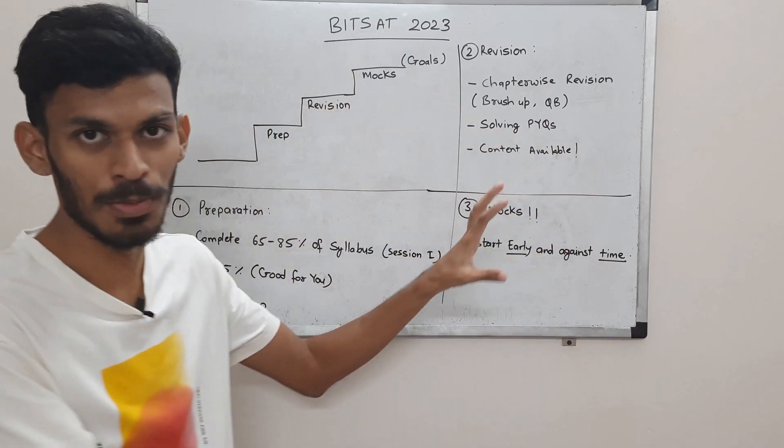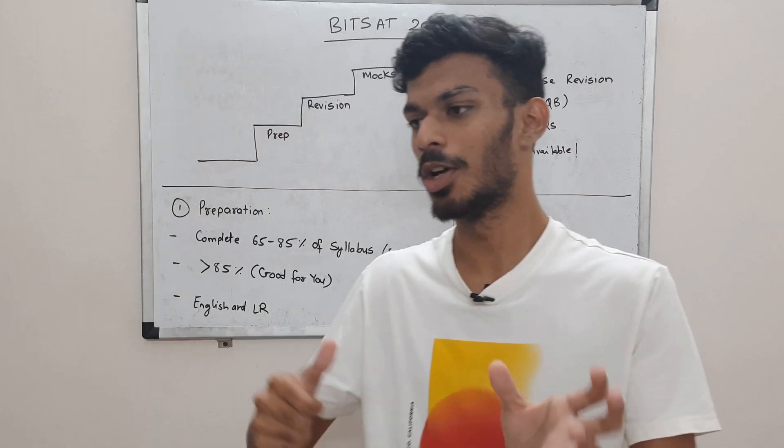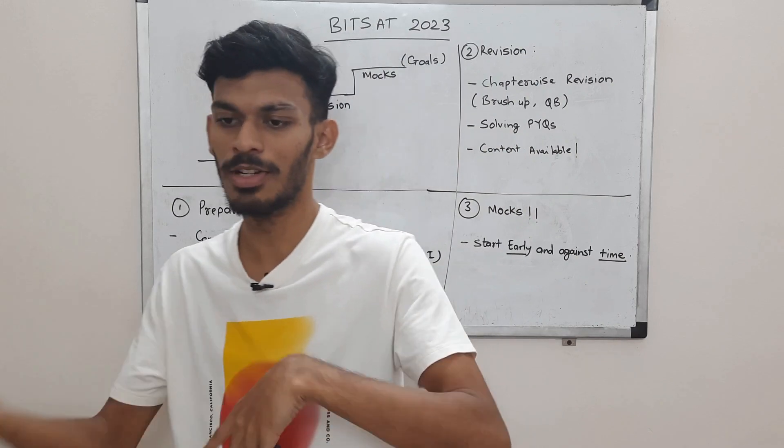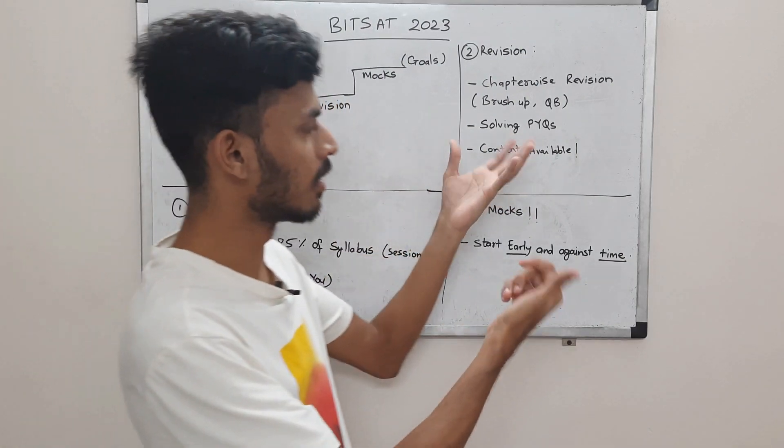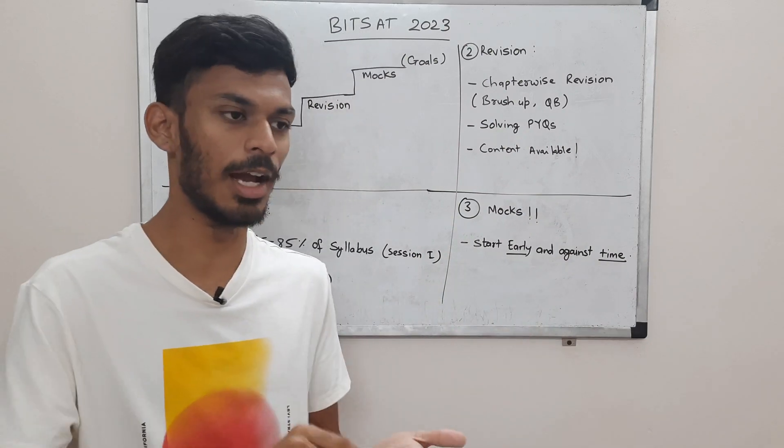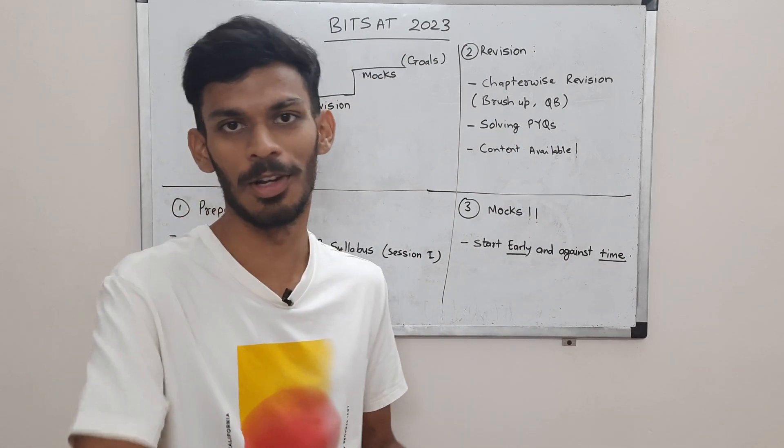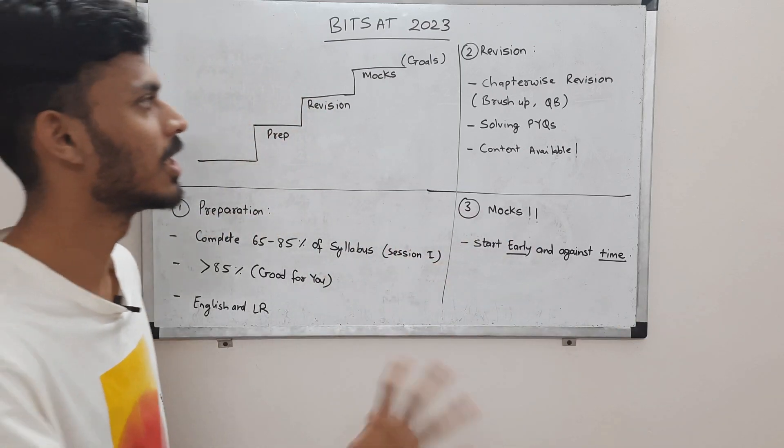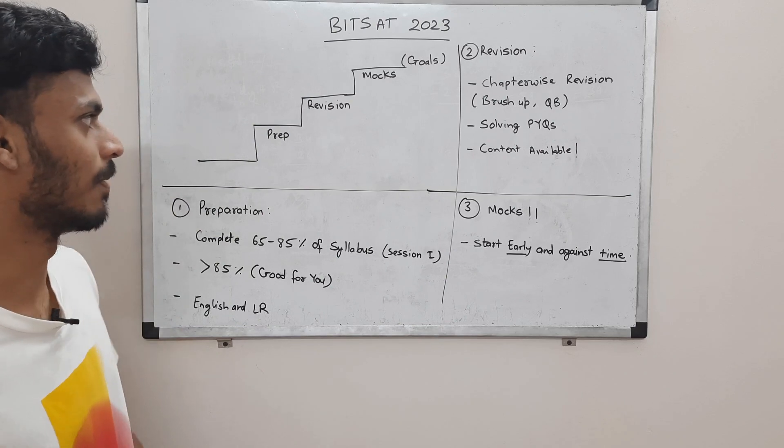So in this period, the last two months, you are supposed to revise and brush up the topics of which you are not able to solve the questions. When solving the questions, you will come to know, I don't know how to solve this question, you will go blank. So you have to revise that concept. So that is meant by brushing up. You don't have to go and study the chapter line by line.